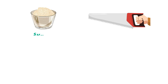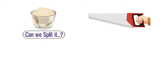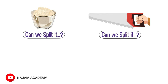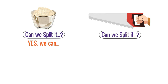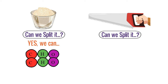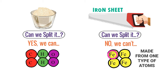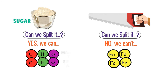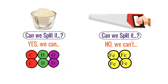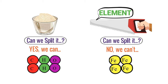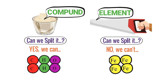The second example: consider sugar and iron. Can we split sugar and iron into two or more simpler atoms? The answer for sugar is yes — we can split it into three different atoms: carbon, hydrogen, and oxygen. For iron, the answer is no; we cannot further split iron, as it is made from only one type of atom. While sugar is made from three different types of atoms. Thus, in chemistry, we call iron an element and sugar a compound.